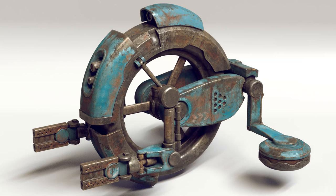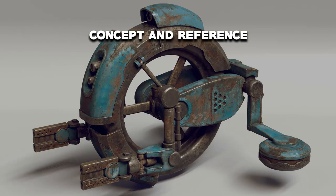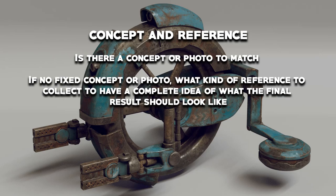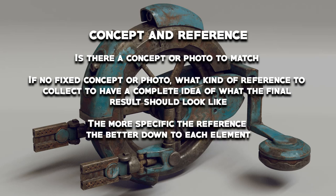Now you have a general idea of the basic thinking process. We can start on our first step, which is determining our concept and reference. When you're at this stage, the first thing to think about is: is there a fixed concept or photo you're trying to match? If yes, things are pretty straightforward — you start to analyze your concept and determine the different types of material you have to build. If no, then you'll have to go on a search process, collecting all kinds of concepts and photos you'd like to incorporate. Remember that the more specific the reference, the better.